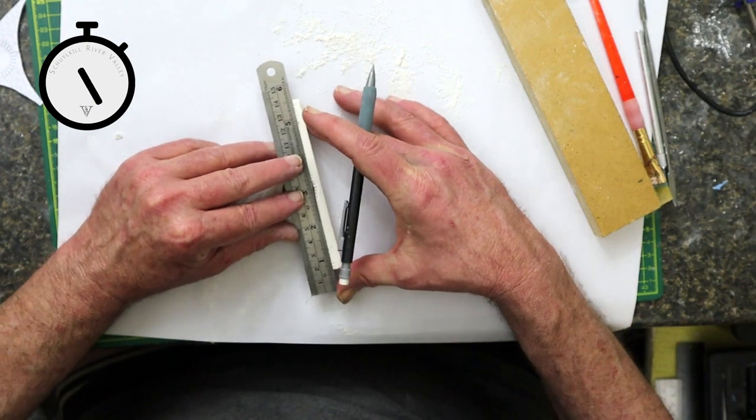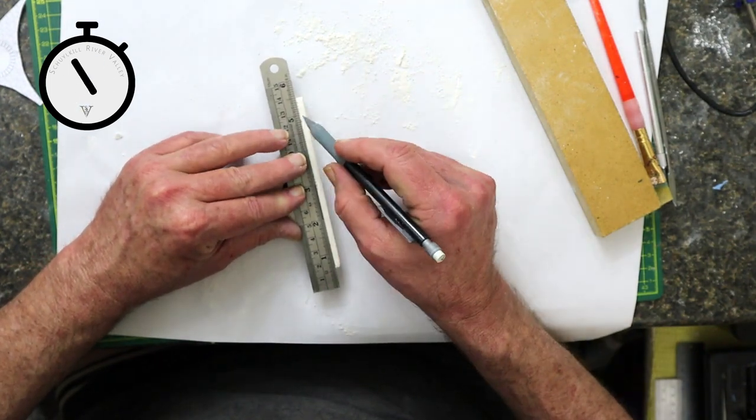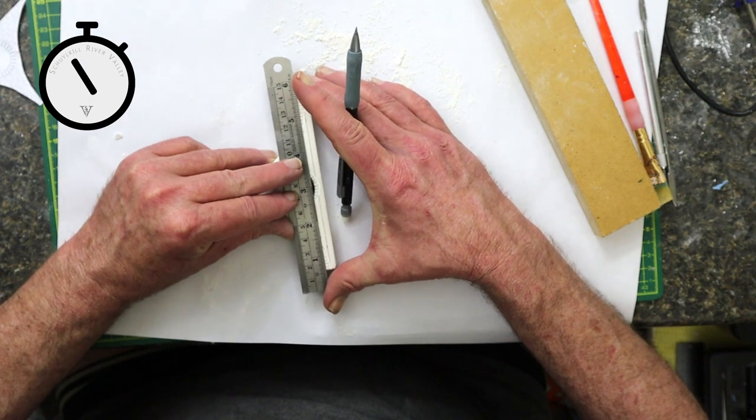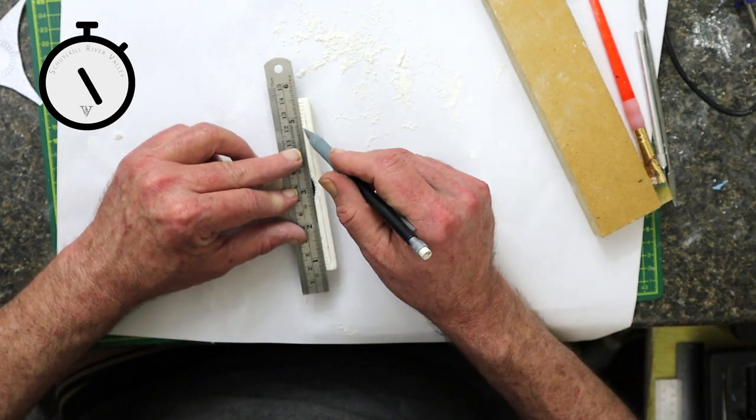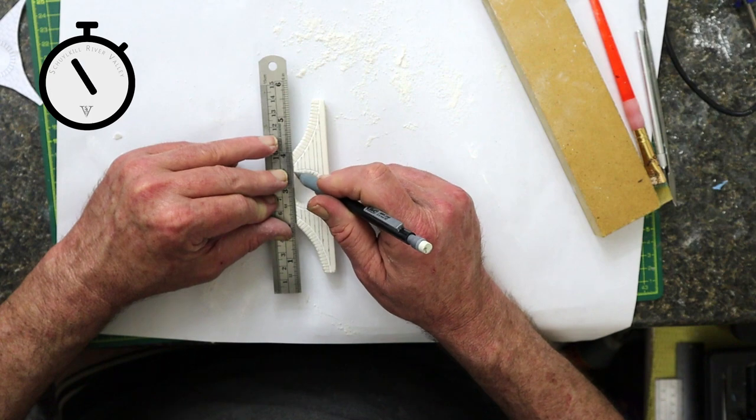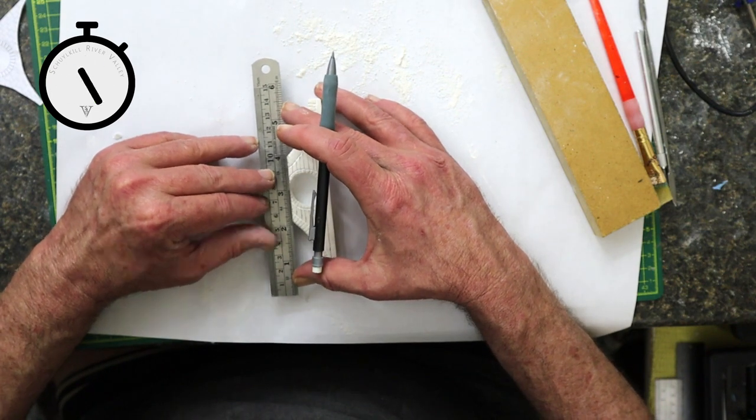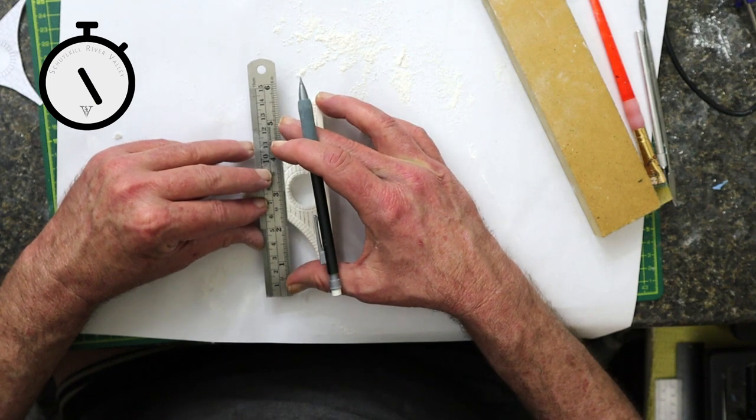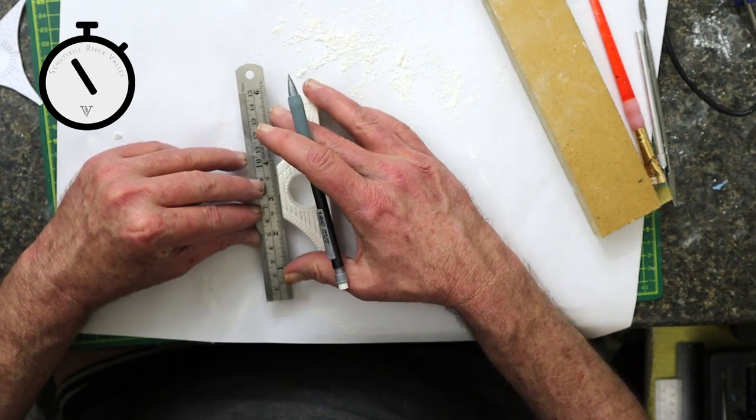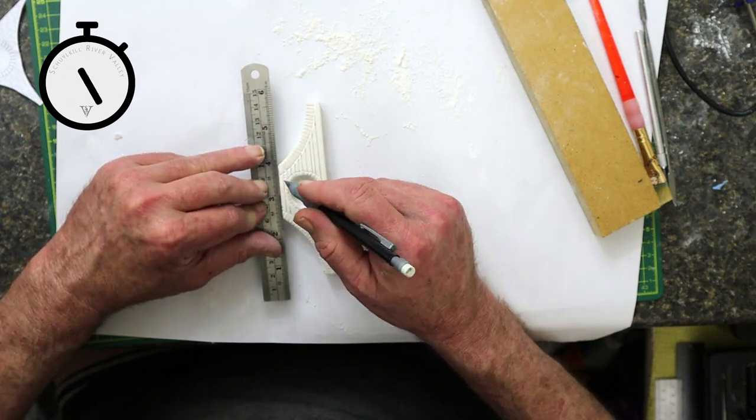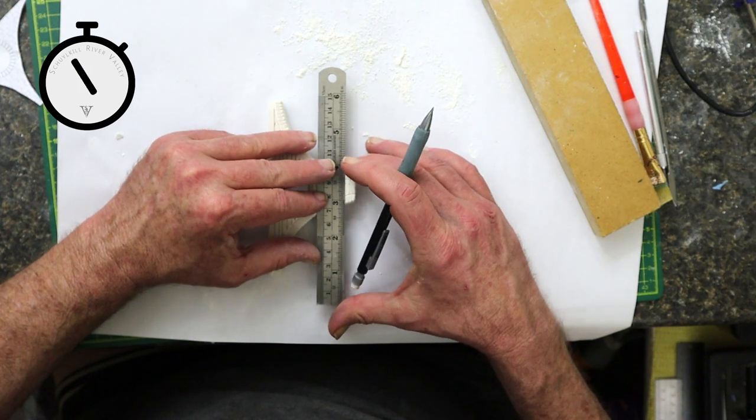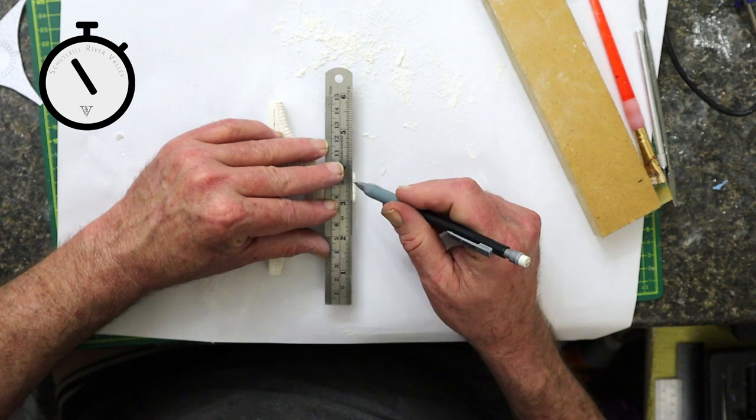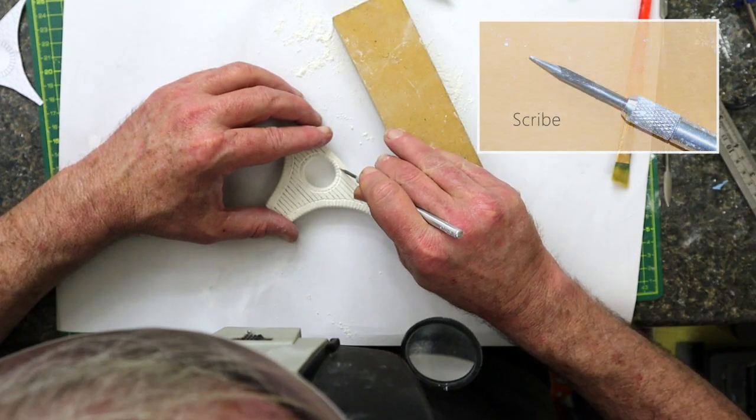Using a straight edge, I draw in the mortar joints, although I am looking for a little variation. With the scribe, I carve the joints.